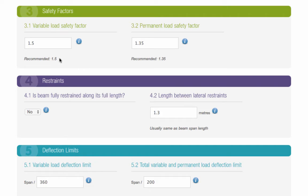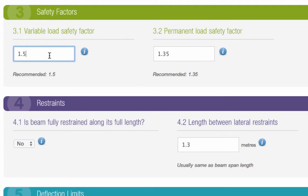In order to ensure your steel beam is really safe, it needs to be capable of withstanding a greater load than you specify. The default safety factor for variable loads is 1.5. This means that the calculator will multiply all variable loads by 1.5. For permanent loads, the safety factor is 1.35, and so all permanent loads you enter will be multiplied by this figure.